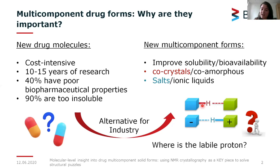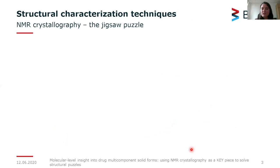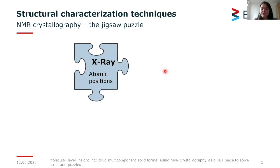In co-crystals, we have two entities in the neutral state sharing hydrogen bond interactions. In salts, we have a charged-assisted hydrogen bond interaction. The distinction between these two entities is highly demanded by the FDA guidelines. To answer the question of where the labile proton is located, we can use a tool called NMR crystallography, which we can think of as a jigsaw puzzle.